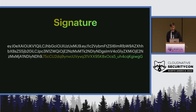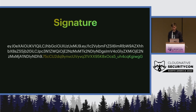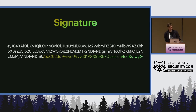Finally, there's the signature. This part is a little more difficult to demonstrate because it doesn't decode into JSON — it's just an integrity check value for the header and payload. This is actually the most important component because it lets us know that the information in those first two sections has not been tampered with and we can trust it.